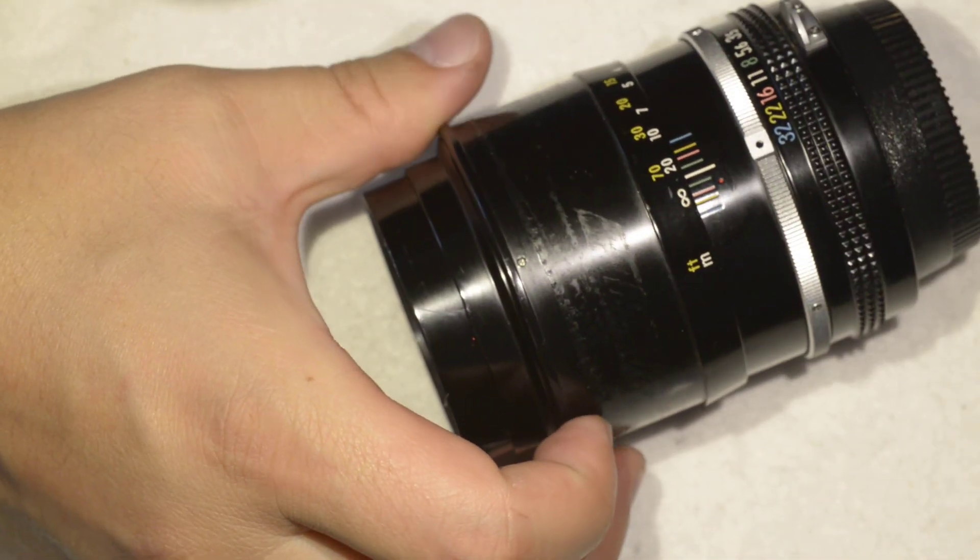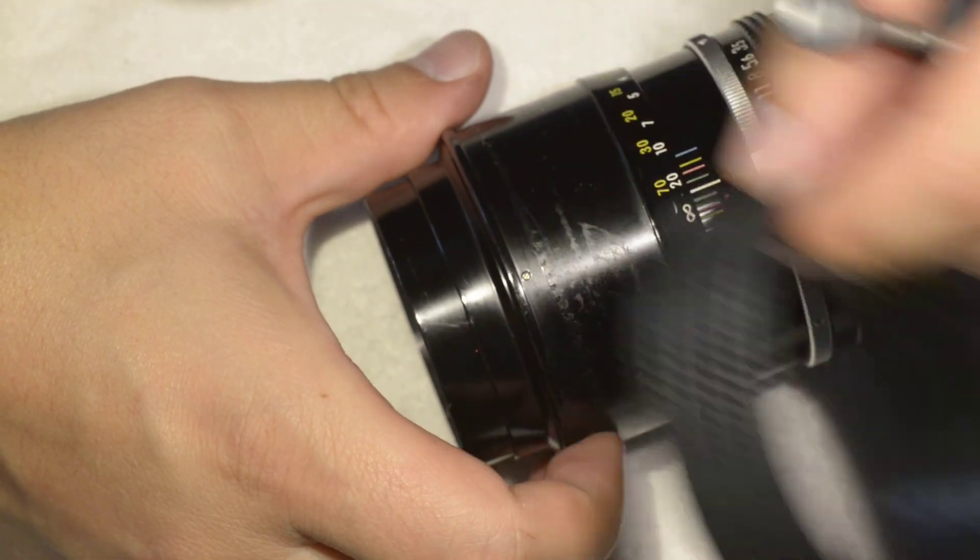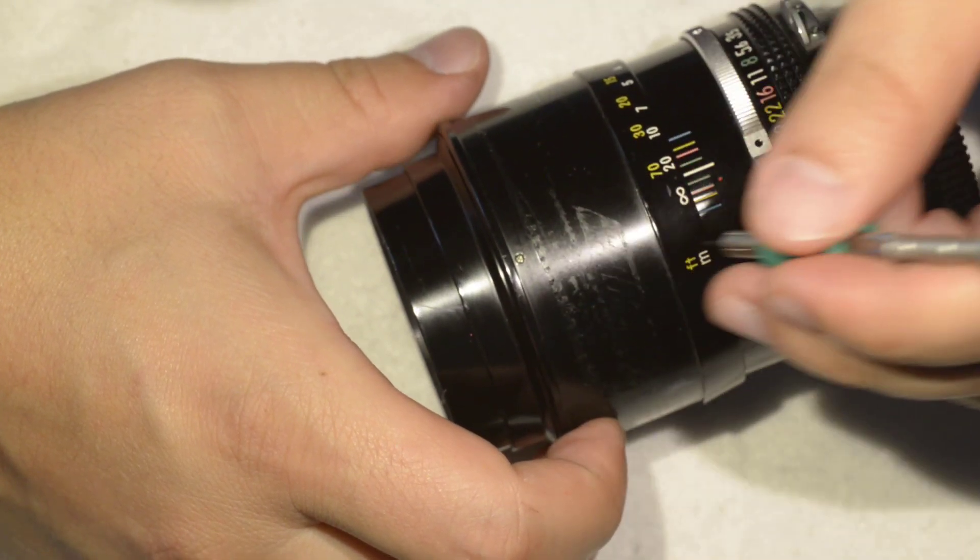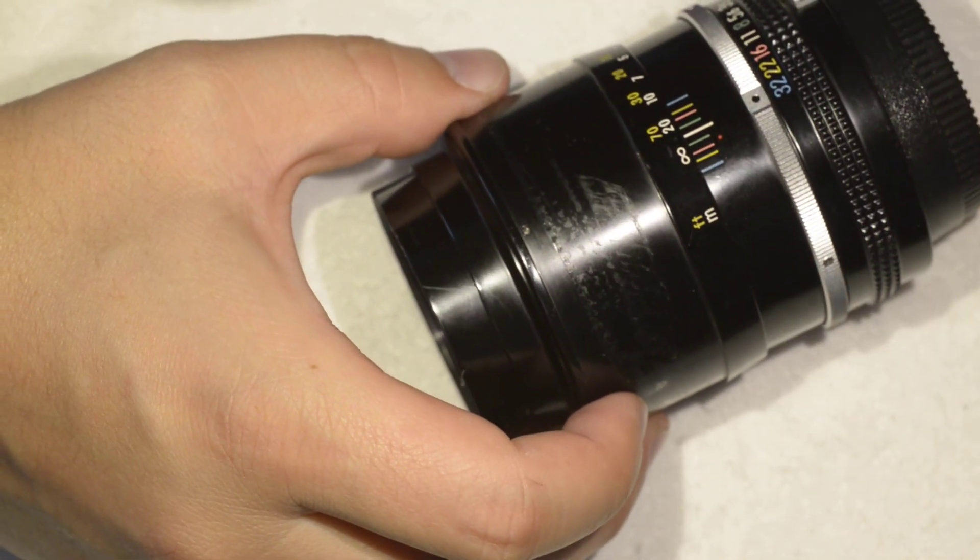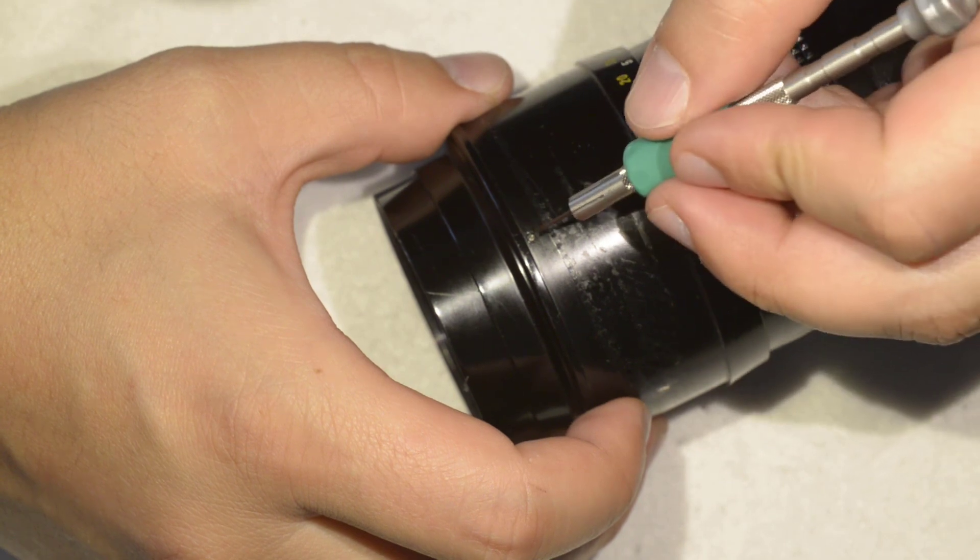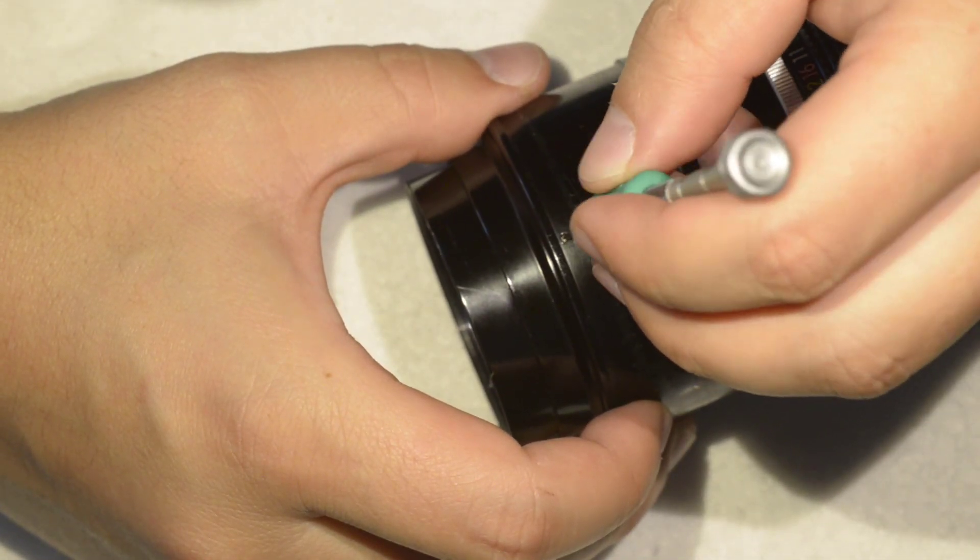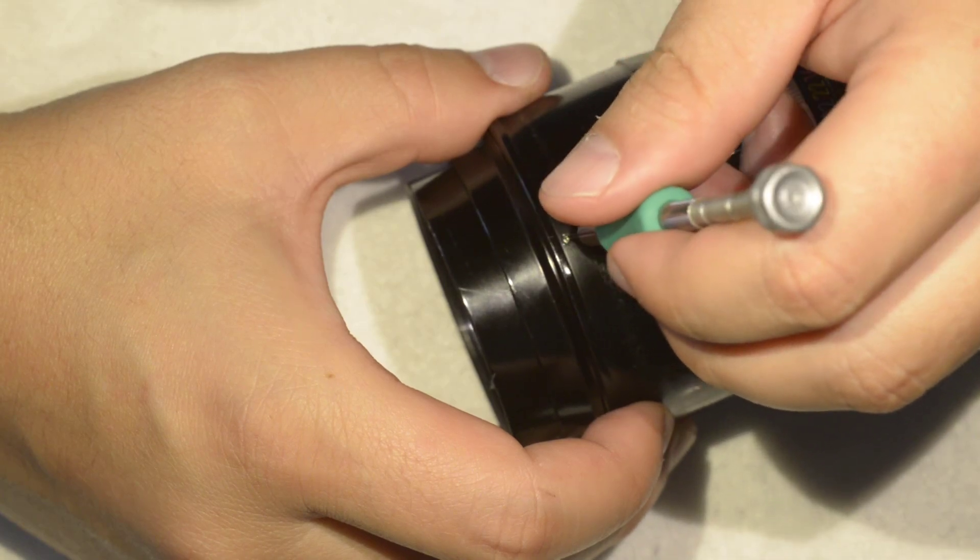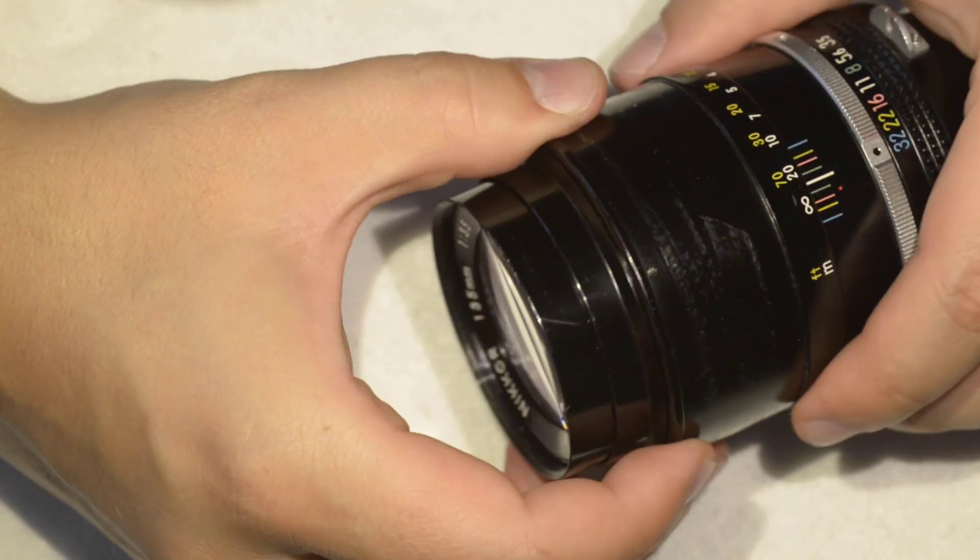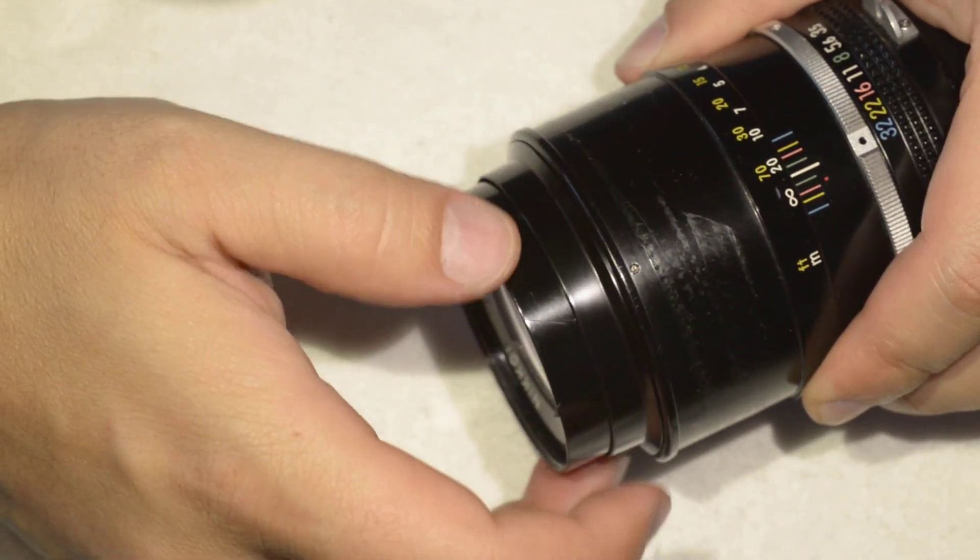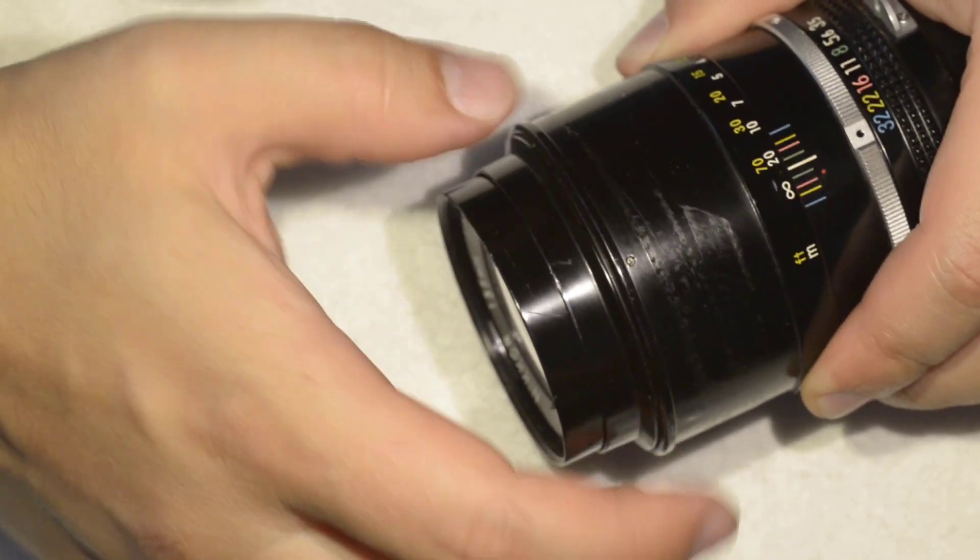Just start by removing the rubber here. Then once you remove it, there is just above the infinity mark a small screw that you don't have to remove entirely - you just have to get it loose so I can remove this ring here.